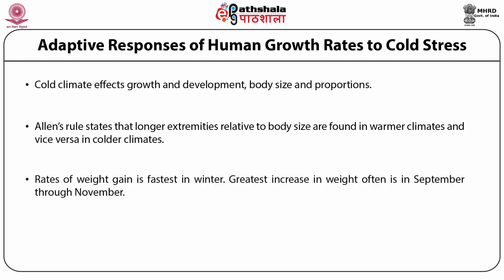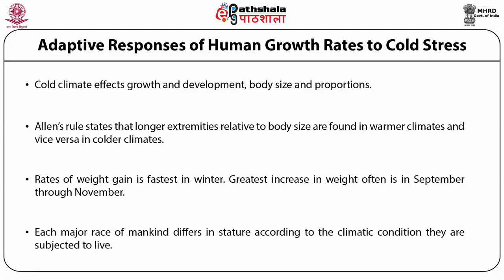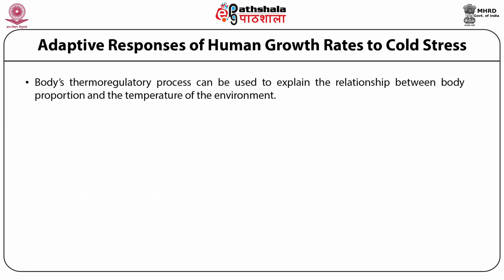Rates of weight gain are fastest in winter, with the greatest increase often occurring from September through November. This seasonal rhythm is not established in children until they are 2 years old. However, this seasonal trend does not conform to individual growth patterns due to differences in endocrine reactivity. Climate seems to have a minor effect on overall human growth rate. Each major race of mankind differs in stature according to climatic conditions. A longitudinal study suggested that 30% of children have increase and decrease of growth velocity cycles dependent on season, while the remaining children showed growth acceleration and deceleration not associated with seasons.